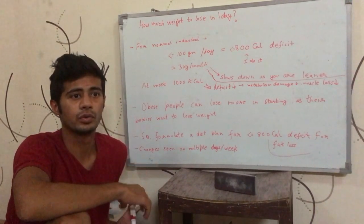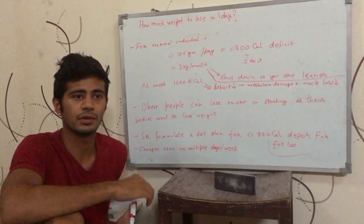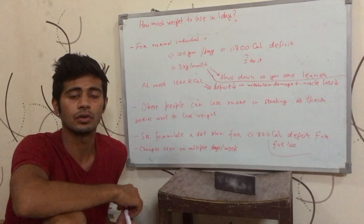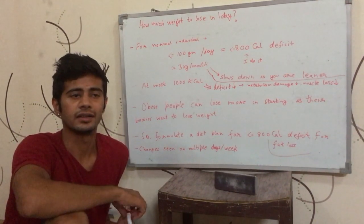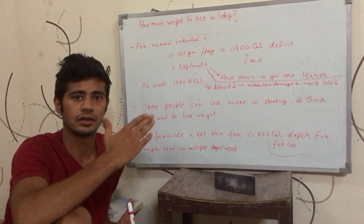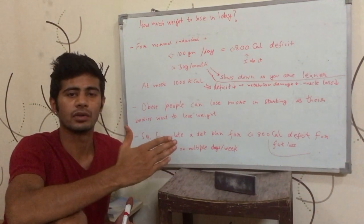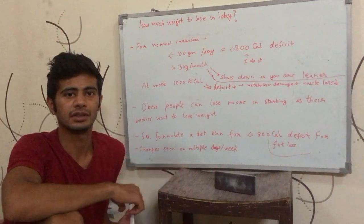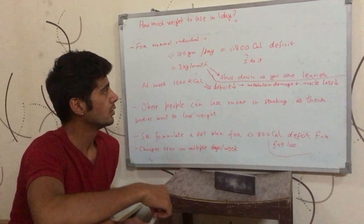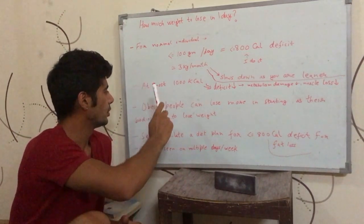So it might not be possible for you to keep losing 3 kilograms per month forever because your body cannot go down to zero weight. Your body will start to resist the weight loss, so there will be a time when you are losing 2.5 kilograms per month, then 2 kilograms per month, something like that.